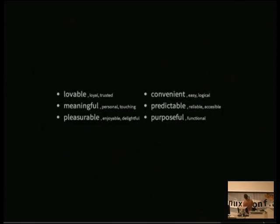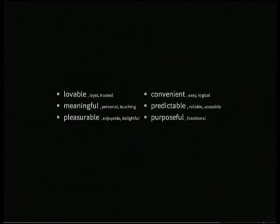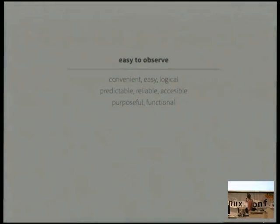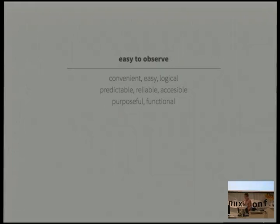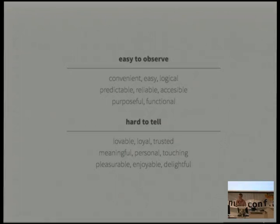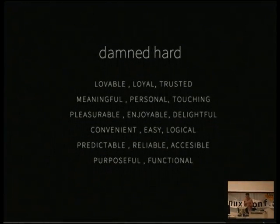I put them next to Maslow because there is that undertone — we need these things, there's a survival aspect to what you create needing to hit a majority of these needs. They're paired well with elements and principles. There are the easy-to-observe ones: convenient, easy, logical, predictable, reliable, accessible, purposeful, functional. And there are the hard-to-tell ones — things you may never know you've reached. You might have a guess, you might gauge it in conversations or the periphery circles of your feedback loop. It's important to aim like hell at all of them.